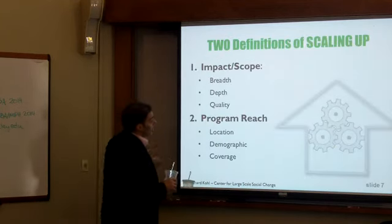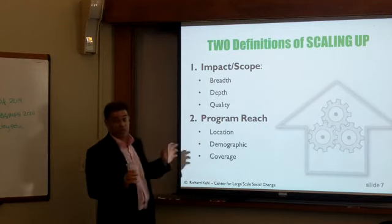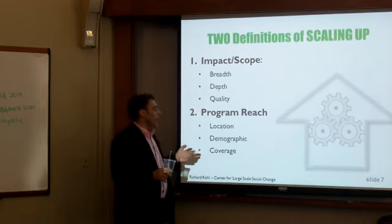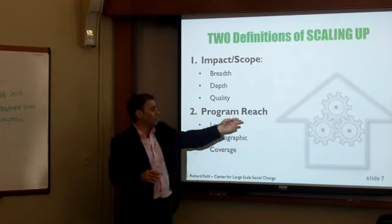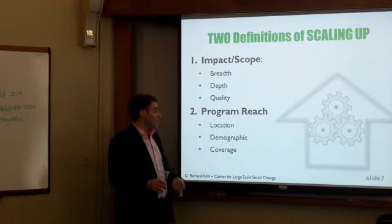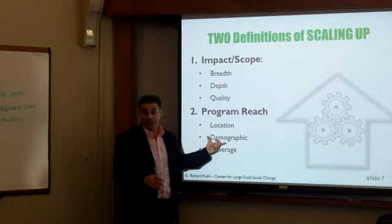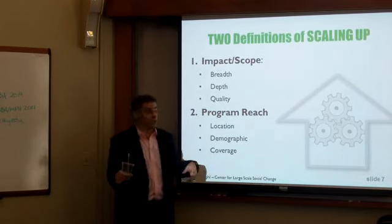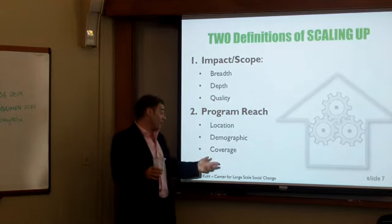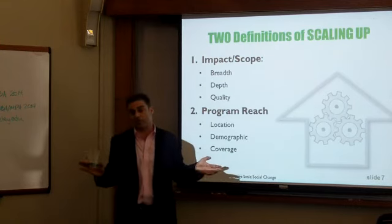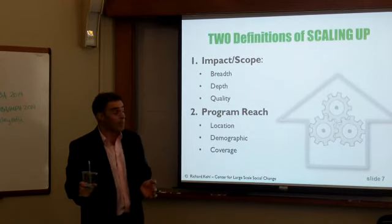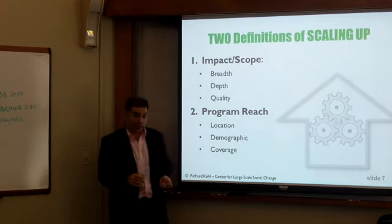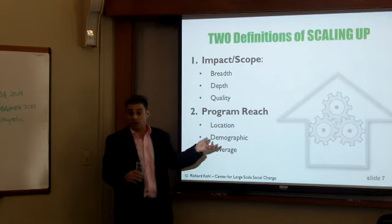There are different definitions of scaling up, but I'll focus on two. Most of the time we talk about program reach: going to more places, or more people, or different demographics — for example, scaling a youth program from 12–15-year-olds to 12–20-year-olds. Or it could be increasing coverage within the same location and demographic, from 25% to 75% of the population. These are not mutually exclusive — you could go to more places, expand demographic targets, and increase coverage simultaneously.